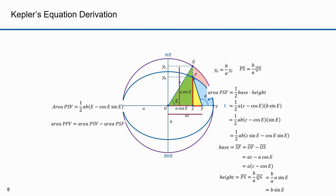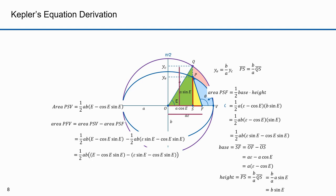Now let's plug in the formula for PSV and PSF. We can factor out one half AB from both terms. There's a plus cosine E sine E because we had a minus outside the parentheses and inside — minus times minus is plus. The cosine E sine E terms cancel, and we're left with one half AB times (E minus epsilon sine E).